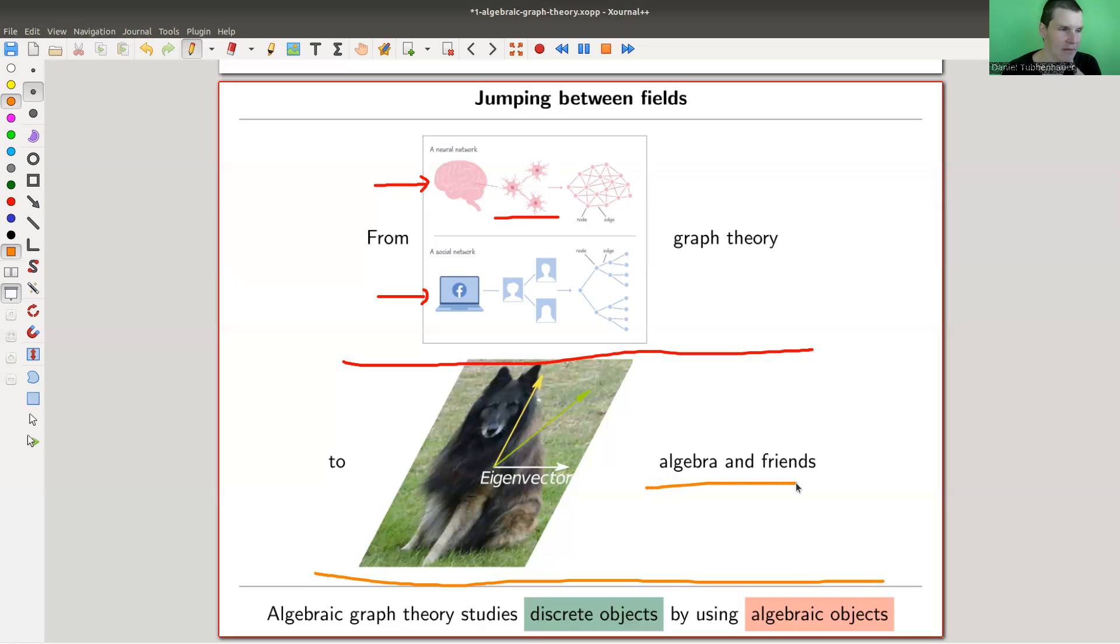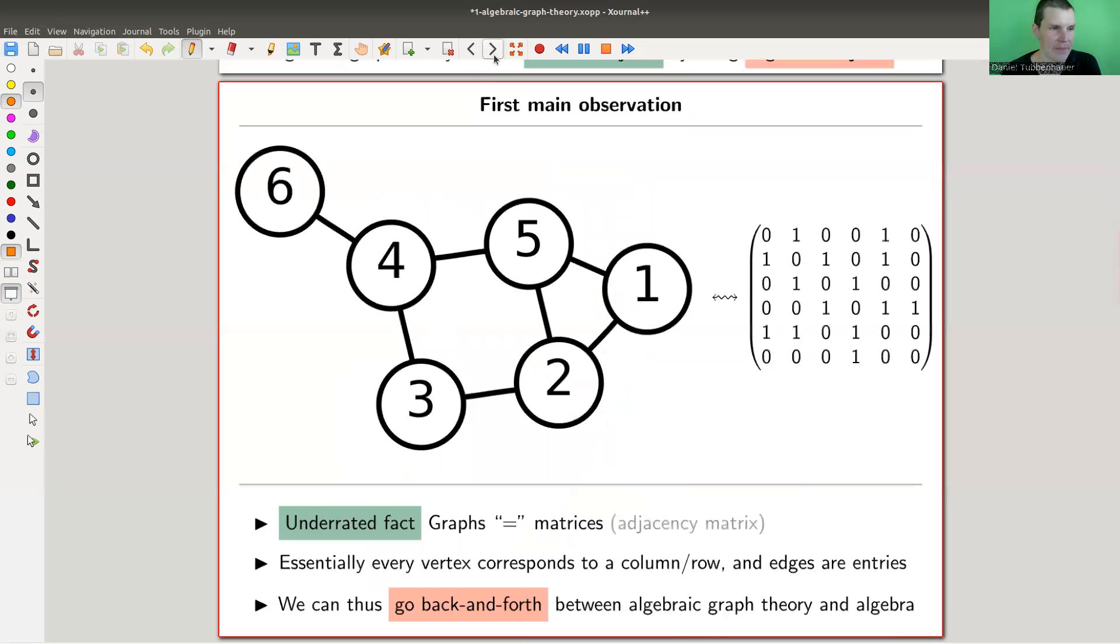This is a really cool idea, and it applies several times. The main observation that will keep us going for a while is the completely underrated fact: graphs and matrices are actually the same objects.